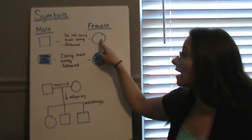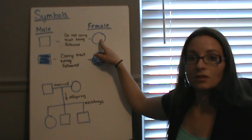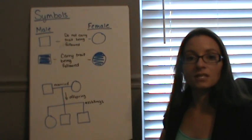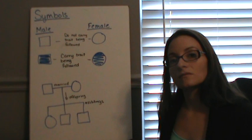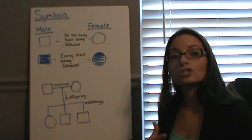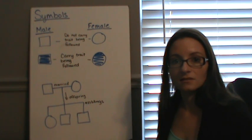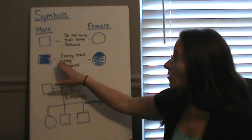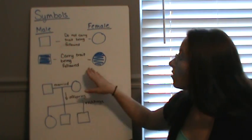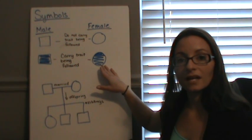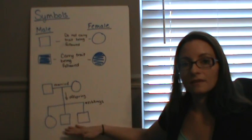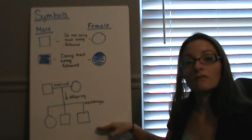A male and a female do not actually have the trait being followed if the square or the circle is not colored in. So if we have a square, we're talking male; if we have a circle, we're talking female. If it's not colored in, they don't show the trait that we're talking about. However, if we have a colored-in square, we're talking about a male that has that trait, or if we have a colored-in circle, a female that has that trait. We represent them through symbols on a family tree.